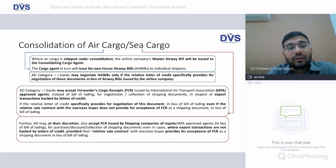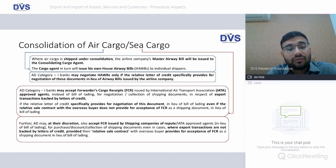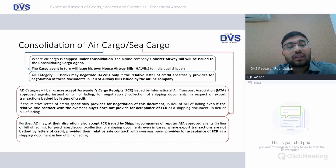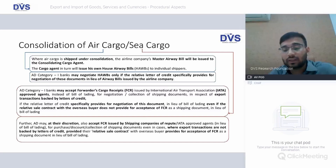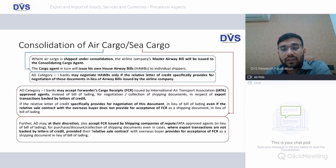Further, AD banks may at their discretion also accept FCRs issued by shipping companies of repute or IATA-approved agents for purchase, discount, or collection of shipping documents even where export transactions are not backed by a letter of credit — provided the relative sale contract with the overseas buyer provides for acceptance of FCR as a shipping document in lieu of bill of lading.